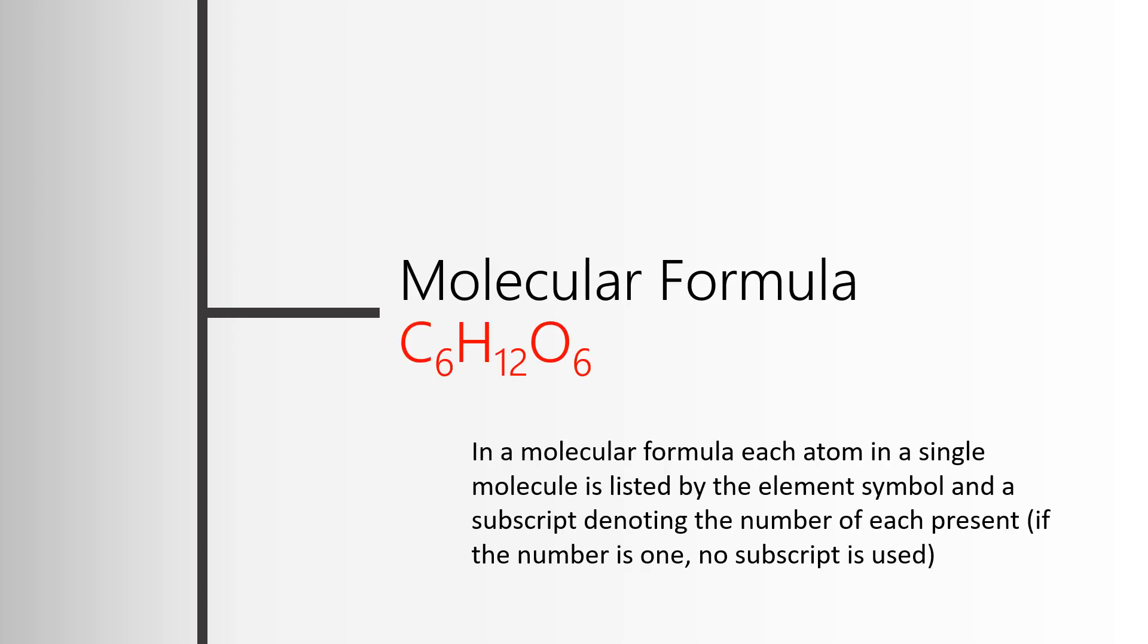Let's look at one example, glucose. Glucose has what we call a molecular formula. A molecular formula tells you how many of each type of element are present in the molecule. There are three elements present: carbon, hydrogen, and oxygen. Each has a subscript that tells you how many are present. If there's a one involved you don't write it. The problem with the molecular formula is it doesn't tell you how these are connected to each other.